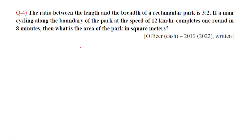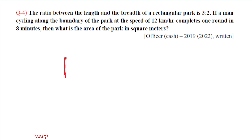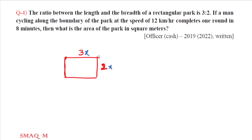Question number four: the ratio between the length and breadth of a rectangular park is 3 to 2. If a man cycling along the boundary of the park at a speed of 12 km per hour completes one round in 8 minutes, what is the area of the park in square meters? We set up the rectangle with length 3x and breadth 2x. Distance equals speed multiplied by time: speed is 12 km/h and time is 8 minutes.